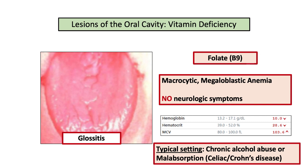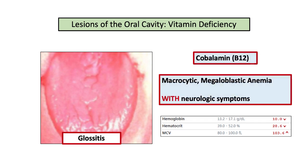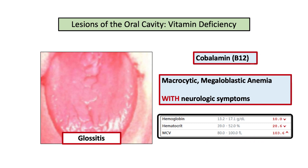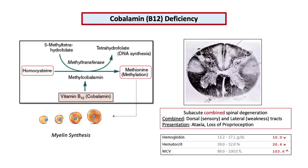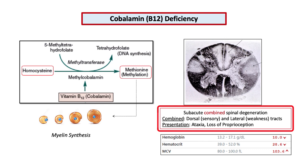Questions will typically include a predisposing condition that leads to folate deficiency, such as chronic alcoholism or a malabsorptive disorder such as celiac or Crohn's disease. Insofar as cobalamin deficiency, glossitis and macrocytic anemia are also present, but these patients are likely to be presented with neurologic symptoms. The neurologic symptoms present with B12 deficiency are thought to be due to B12's role in methionine synthesis, which in turn contributes to myelin synthesis. Without myelin, there is a degeneration of the dorsal columns, lateral corticospinal tracts, and spinocerebellar tracts of the spinal cord, all leading to gait abnormalities and muscle weakness.